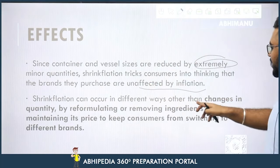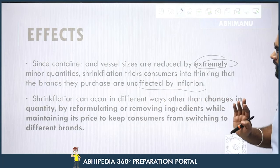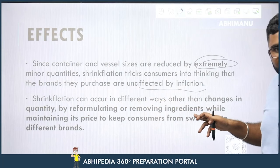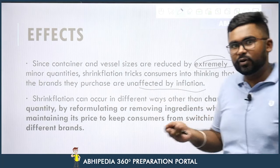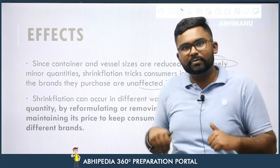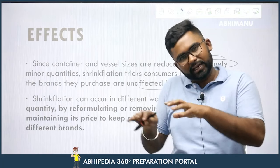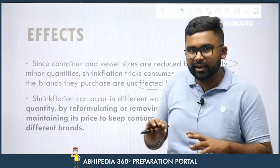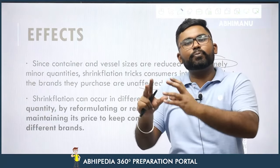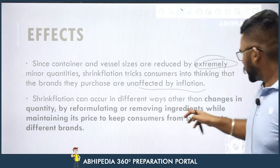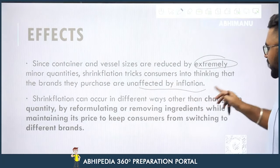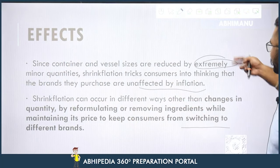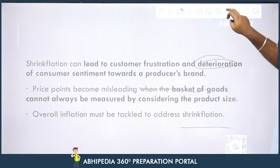Shrinkflation can occur in different ways other than changes in quantity — for example, by reformulating or removing ingredients. Like a cashew-almond biscuit where the quantity of cashews and almonds decreases but the price remains the same. The retail price stays the same as a product, but it is not the same as it used to be. Changes in quantity by reformulating or removing ingredients, while maintaining price to keep consumers from switching brands — companies have to do something, and this is what they are doing.